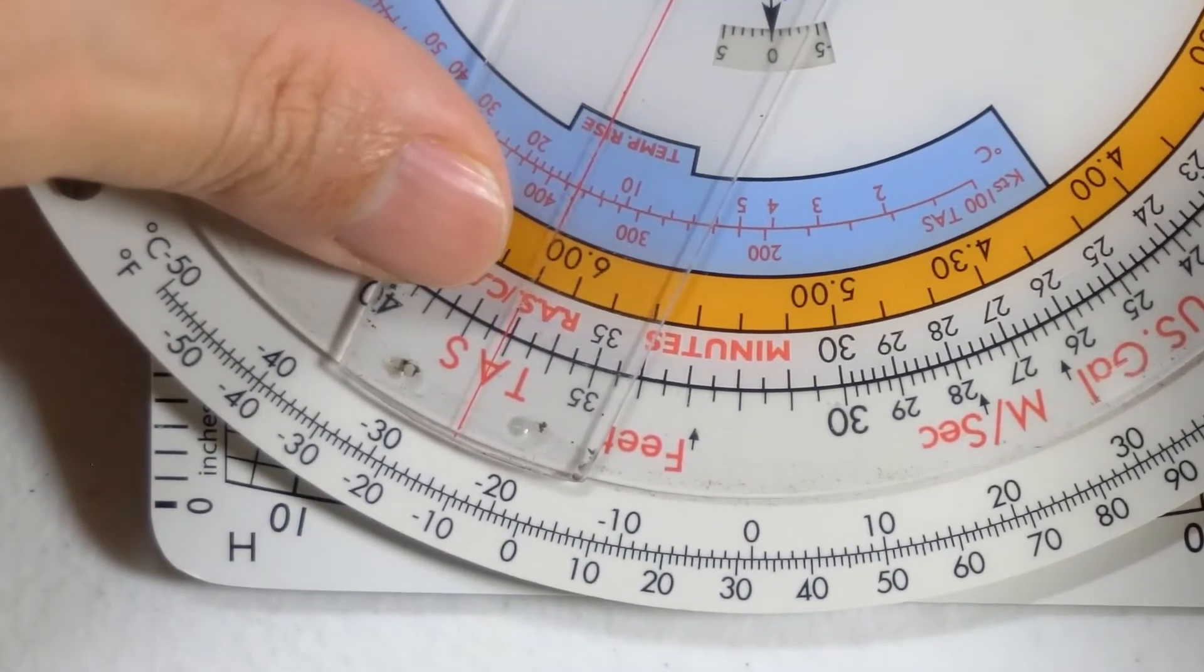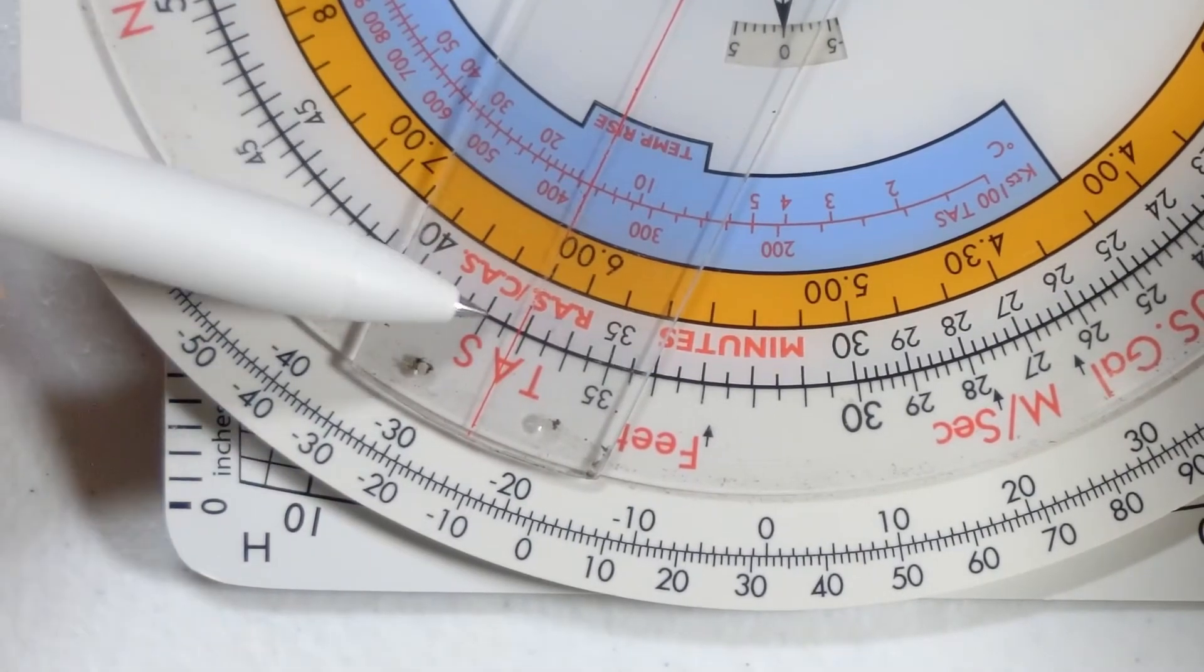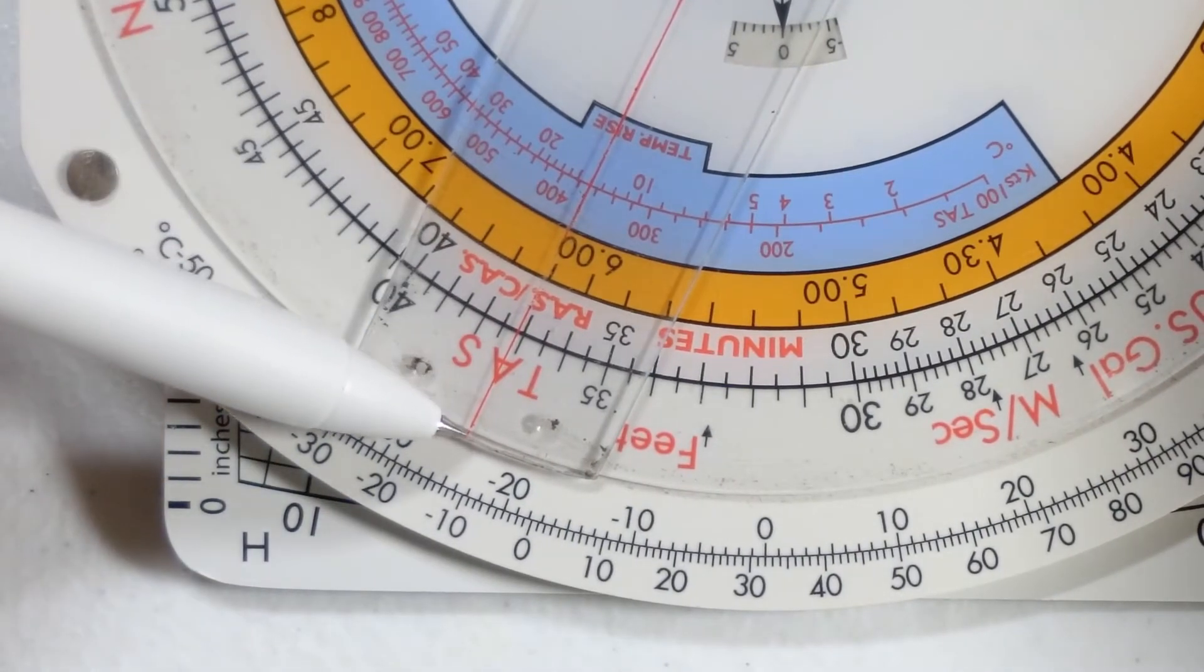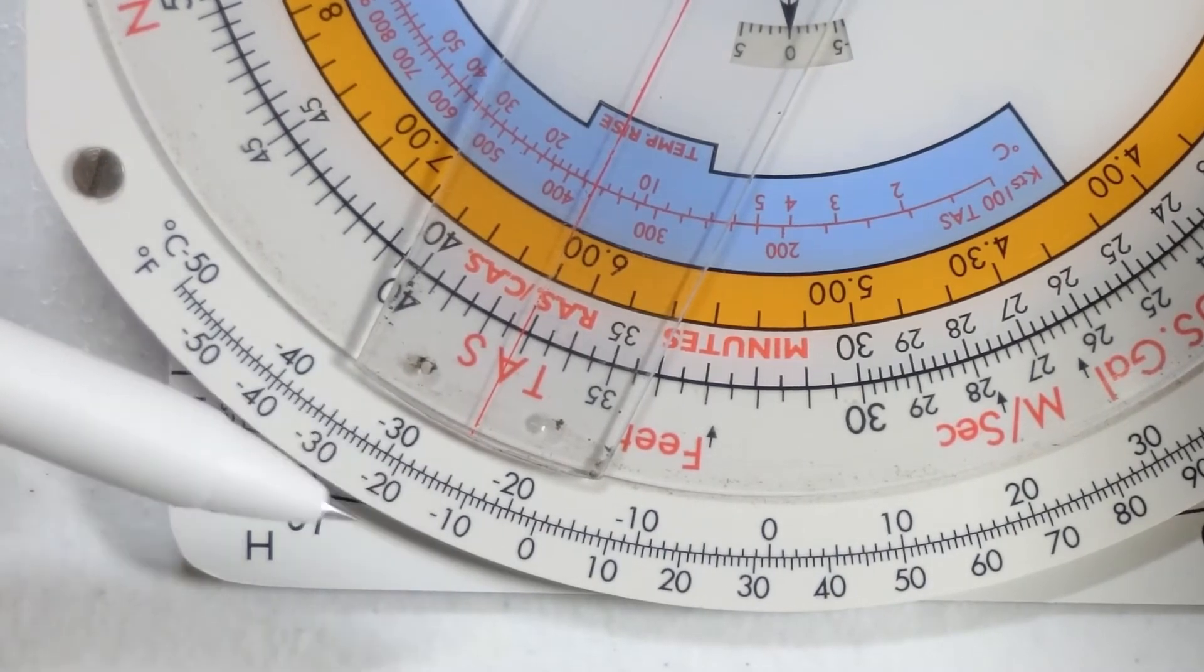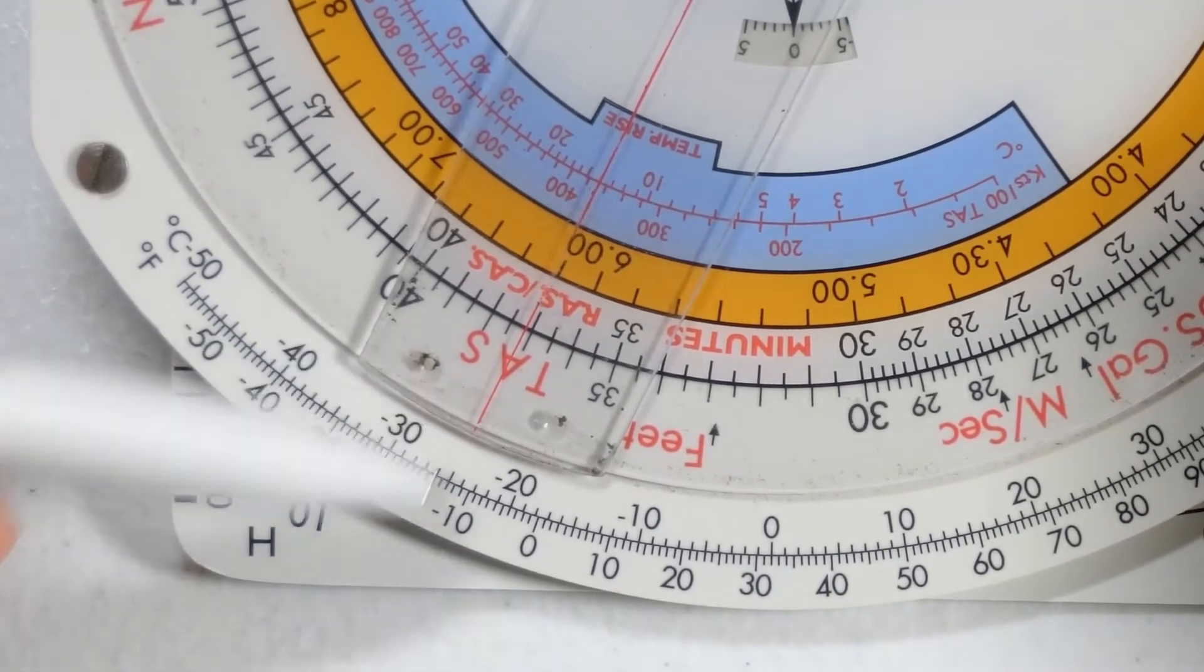And the only issue with this is that the cursor, unlike all the other conversions on the CRP5, the cursor doesn't exactly extend out far enough to give you a super accurate reading.